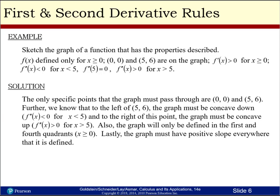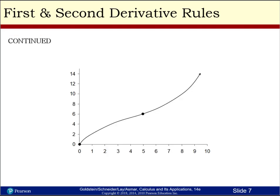Stating that again: the only specific points the graph must pass through are zero, zero and five, six. To the left of five, six the graph must be concave down, and to the right it must be concave up. The graph will only be defined in the first and fourth quadrants since x is greater than zero. Lastly, the graph must have a positive slope everywhere it is defined. Notice: increasing, concave down, then concave up, with a point of inflection.